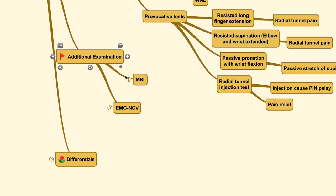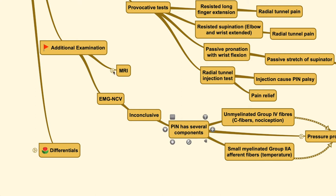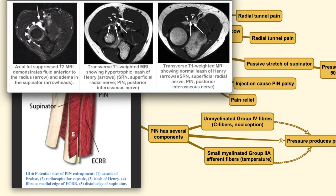Additional examination should include EMG-NCV to help you localize the condition, although the results can indeed be inconclusive. MRI over the compression site may or may not show any pathology. The axial fat-saturated T2 MRI can demonstrate fluid collection anterior to the radius, along with edema over the supinator muscle. You could also see branches of the radial nerve — the PIN and also the superficial radial nerve branches — and a hypertrophic leash of Henry, as pointed by the arrows. The next image shows a normal leash of Henry around the PIN and SRN.